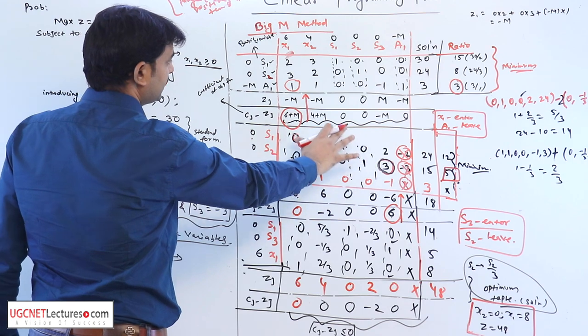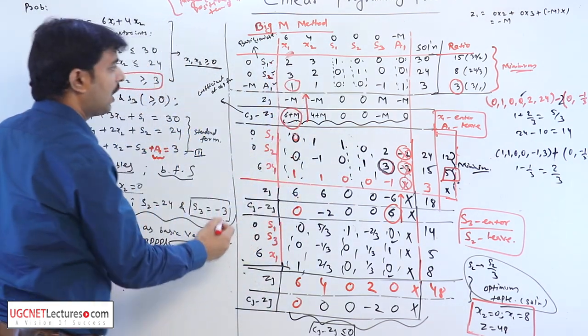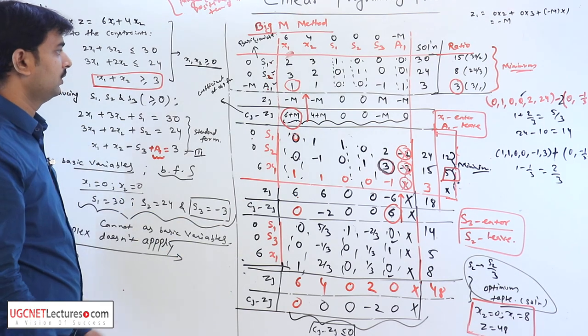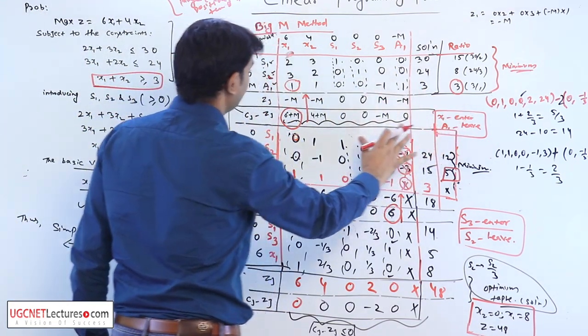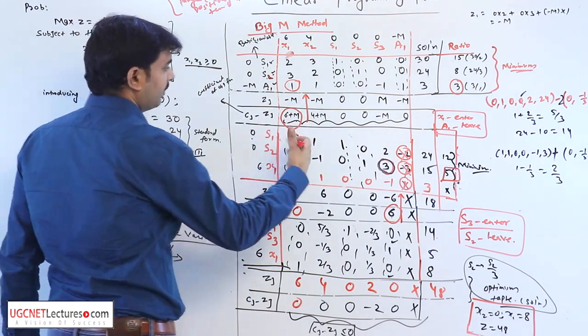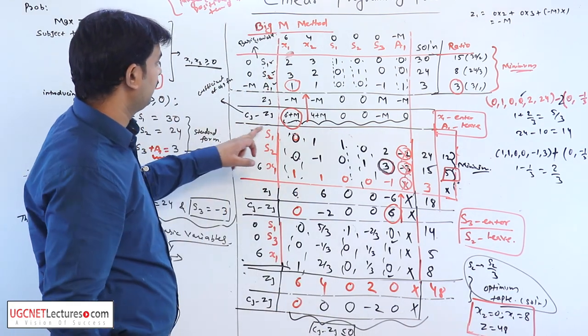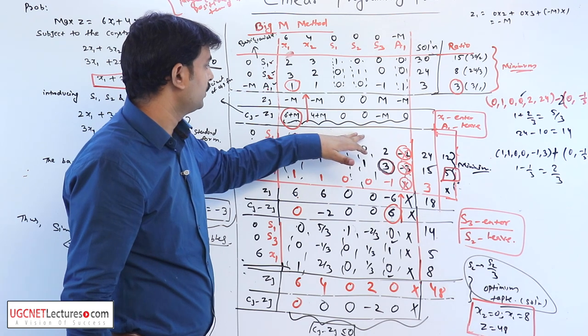We make a simplex table. The first iteration here, s1, s2, and now a1 is our basic variable. We find zj and cj minus zj, and the criteria of optimality we have checked. This is the maximum value which one is our maximum value.